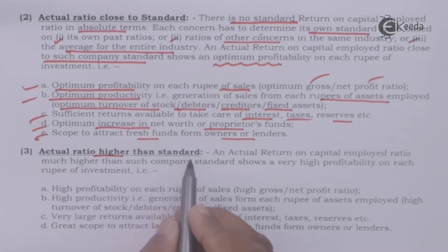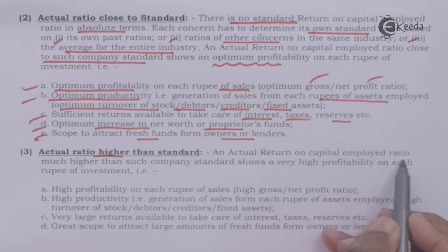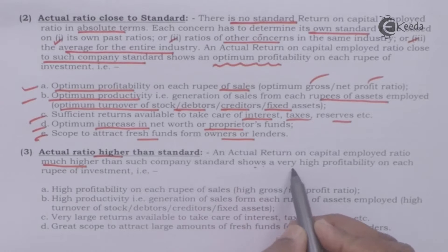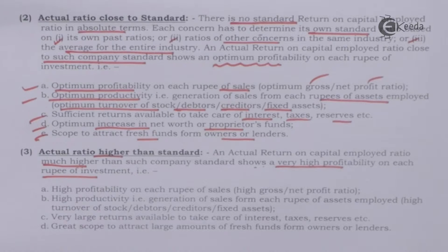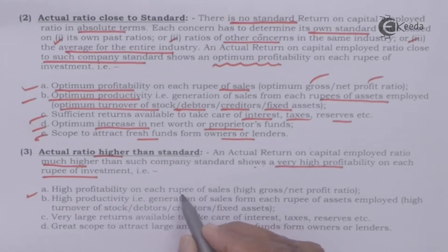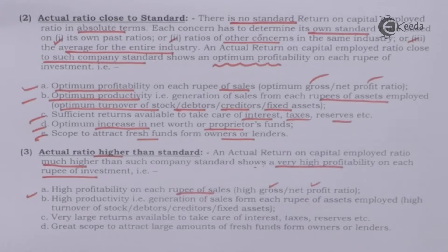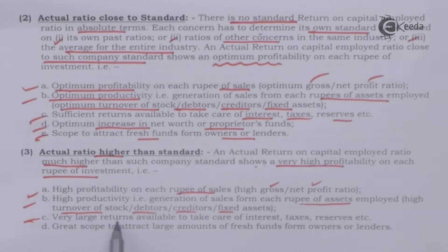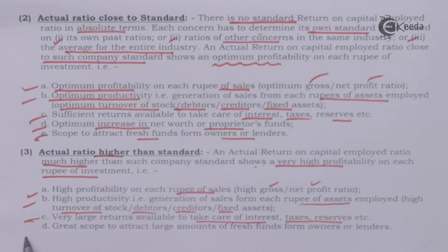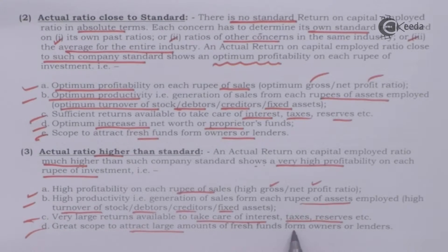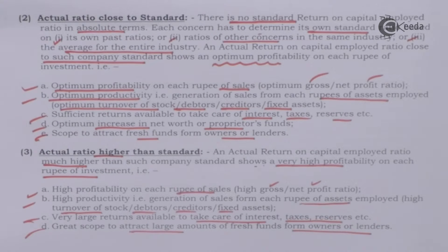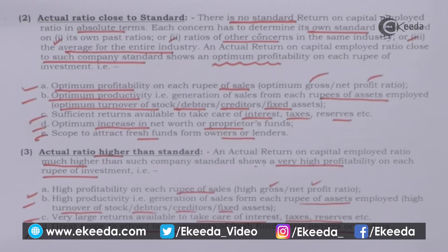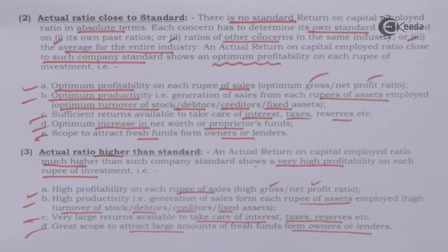Actual ratio higher than standard: A return on capital employed much higher than the company standard shows very high profitability on each rupee of investment — high profitability on each rupee of sales, high gross and net profit ratio, high productivity in generating sales from each rupee of assets employed, high turnover of stock, debtors, creditors and fixed assets, very large returns to cover interest, taxes and reserves, and great scope to attract large amounts of fresh funds. This indicates the company is using its resources in the best possible manner to maximize returns to owners and lenders.